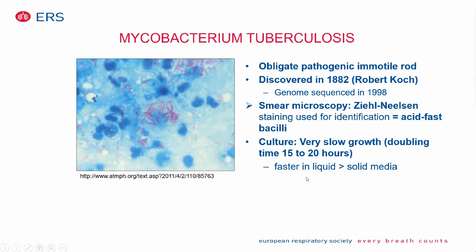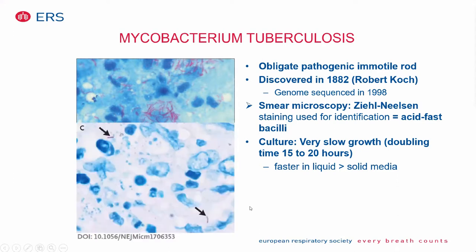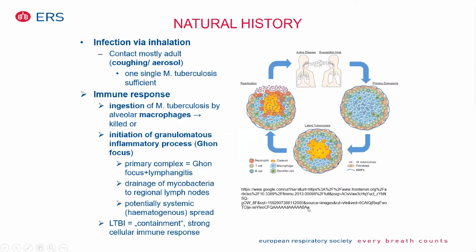It is generally identified by smear microscopy using acid-fast staining, which we call Ziehl-Neelsen staining. The red rods are identified by this staining. One of the specifics of mycobacterium is that it grows very slowly — the doubling time in culture is 15 to 20 hours — which is why it takes several weeks to get a definitive culture confirmation of diagnosis. Sometimes only single rods are visible on the microscopic field, so you have to look very carefully.